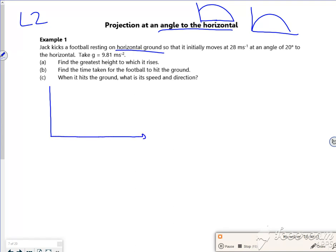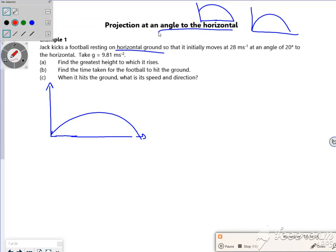So we'll draw a picture. It goes up and lands like that. That's a bit steep for 20 degrees, isn't it? Let me make it a little bit shallower. There. So it's going at 28 meters per second at an angle of 20 degrees there, so it's traveling horizontally and vertically.